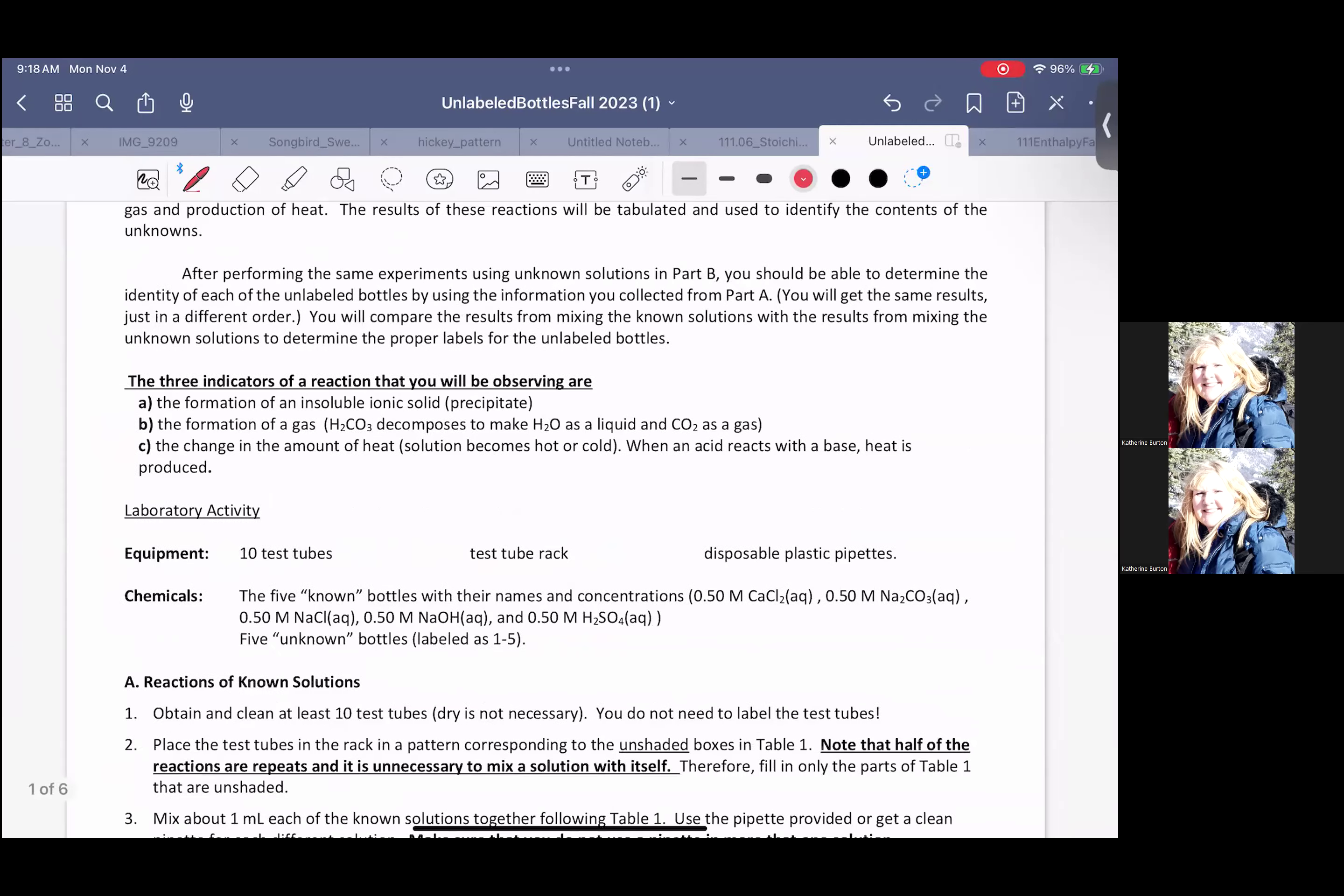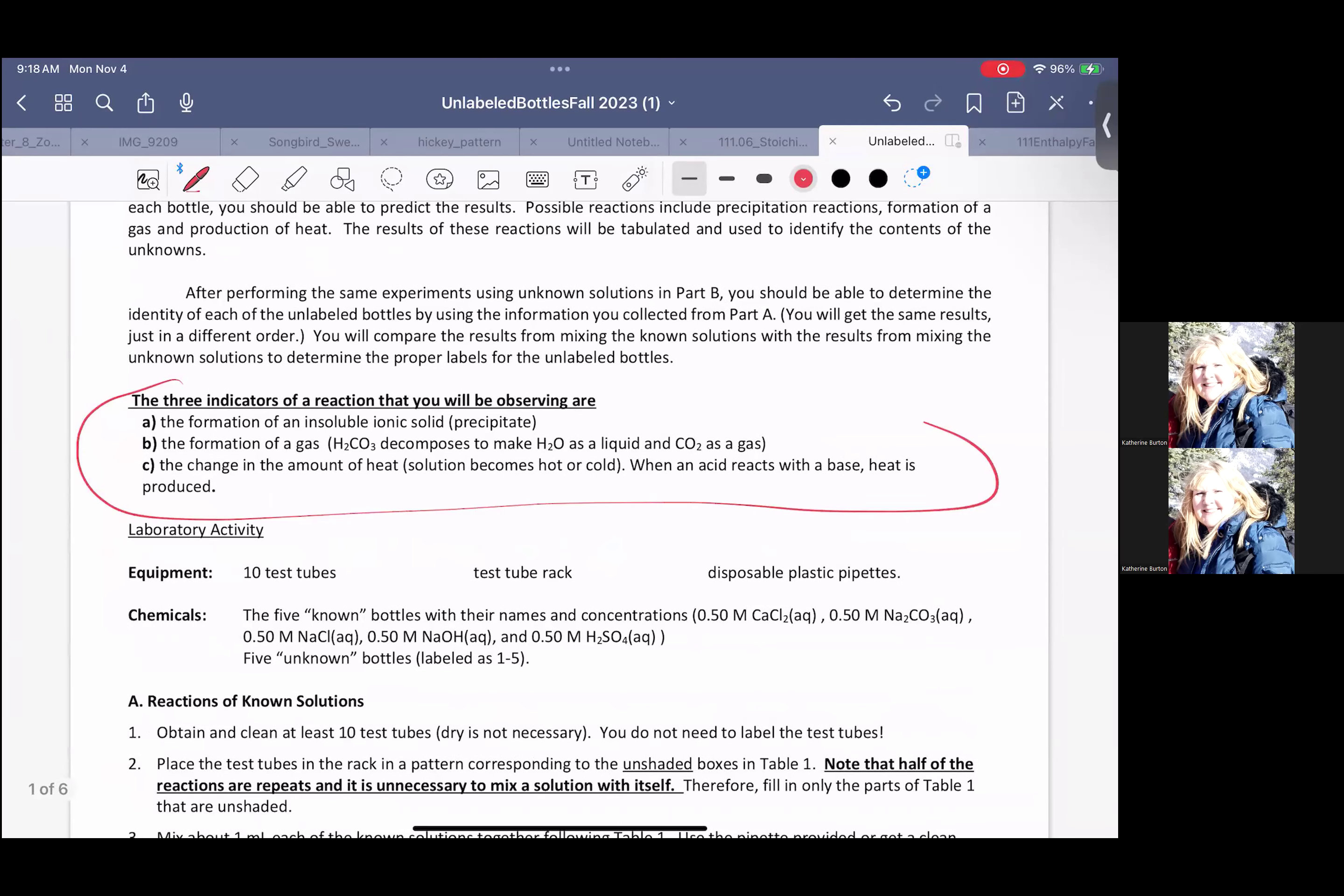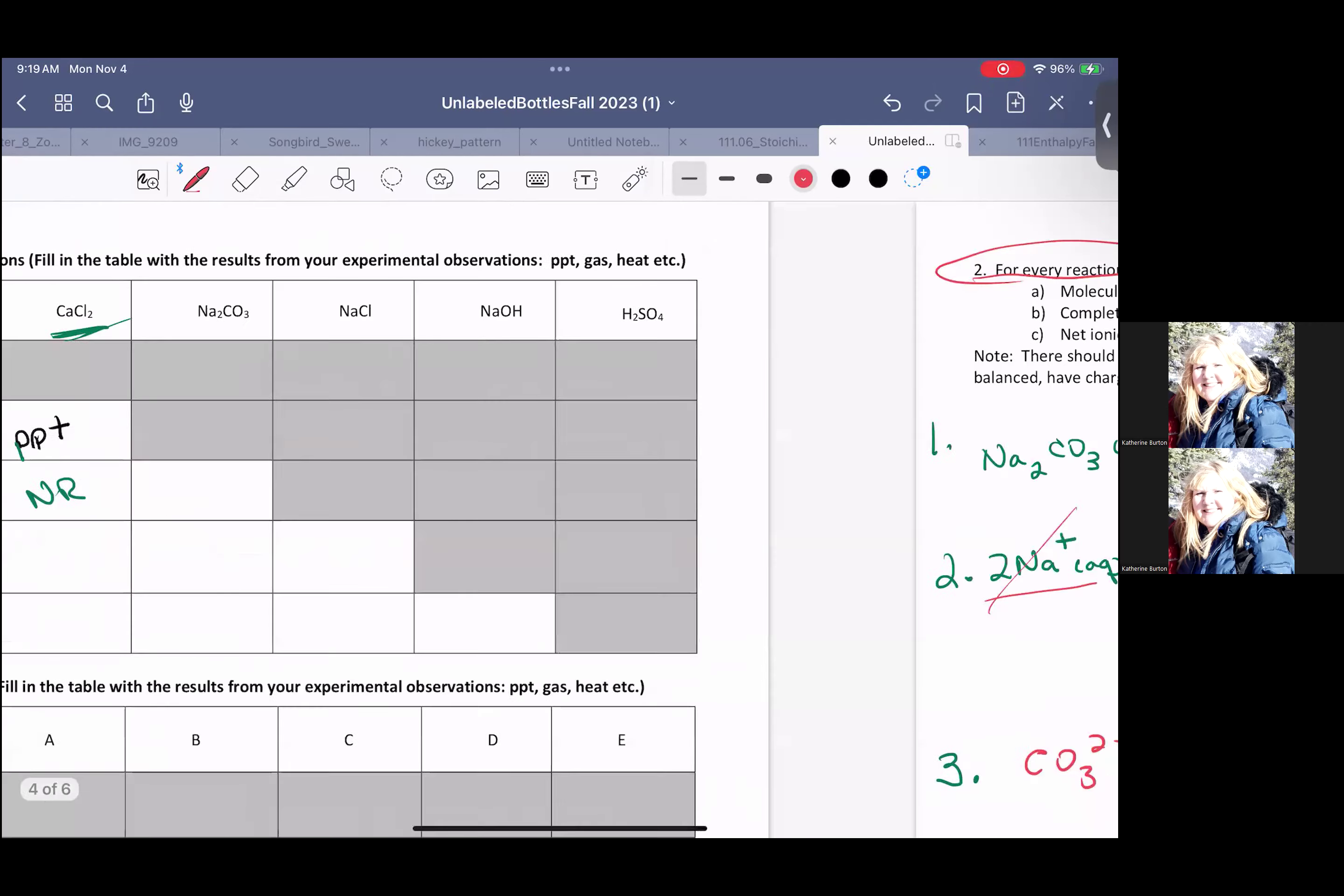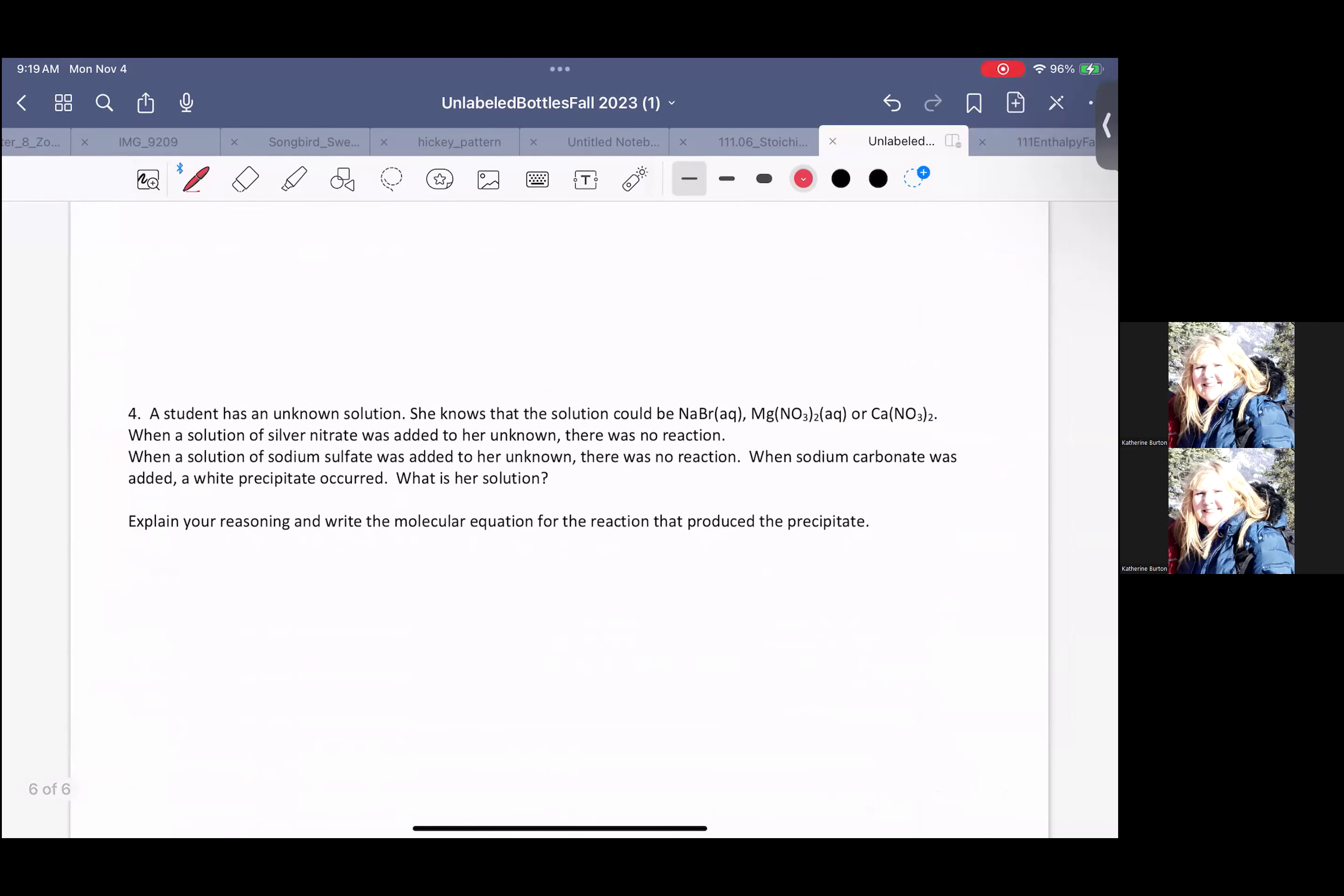And realize that we have given you some hints on this one. Page one. There's page one. There you go. Three indicators of reactions. Think about the fact that you're going to make your bubbles is going to be carbon dioxide as a gas. That's what you need to do on that one.